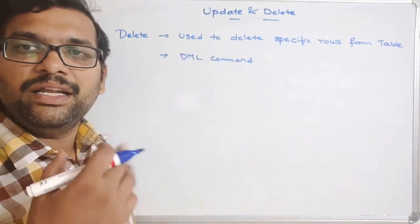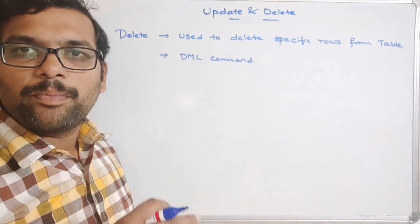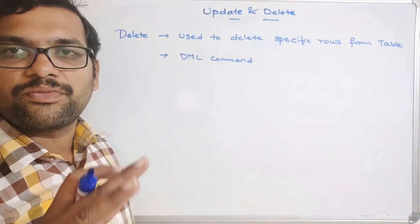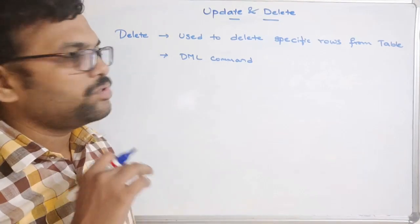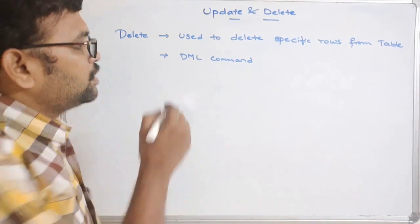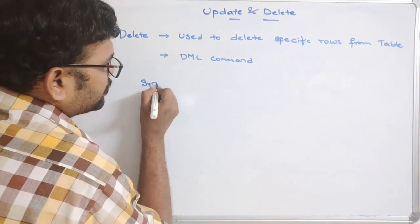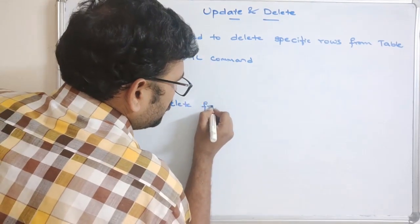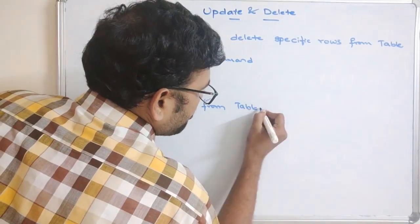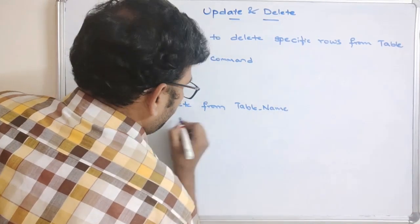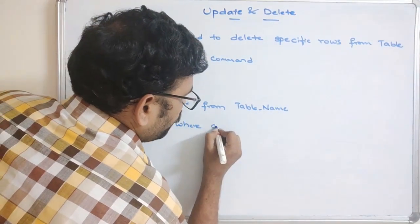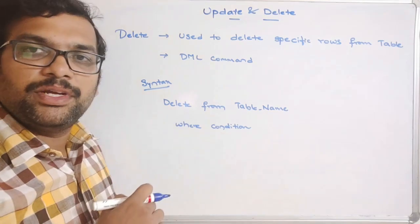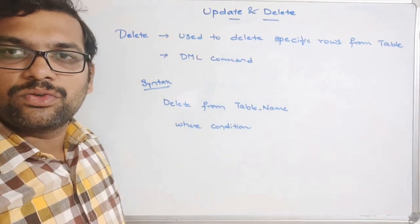DROP and TRUNCATE are DDL commands. The DROP command is used to remove the complete structure of the database, and TRUNCATE removes all the rows of a table. But the DELETE command deletes specific rows based upon a condition. The syntax for DELETE is: DELETE FROM table_name WHERE condition.